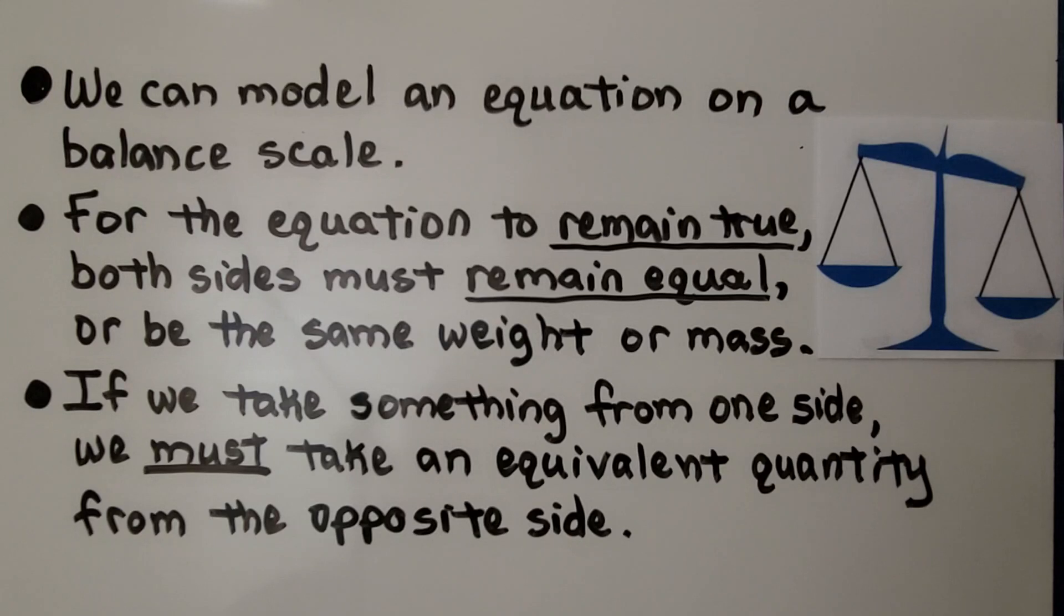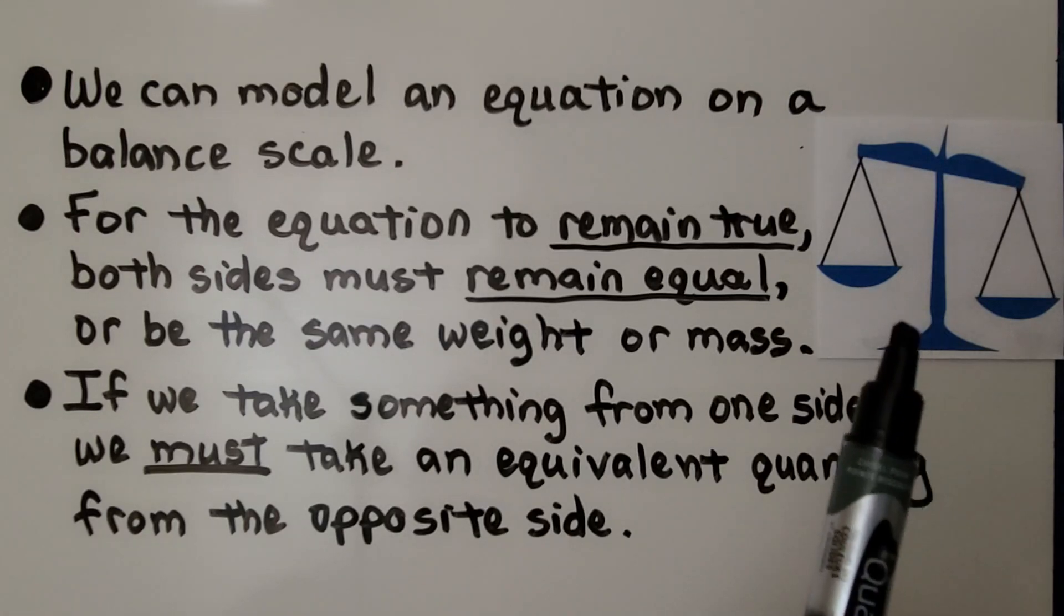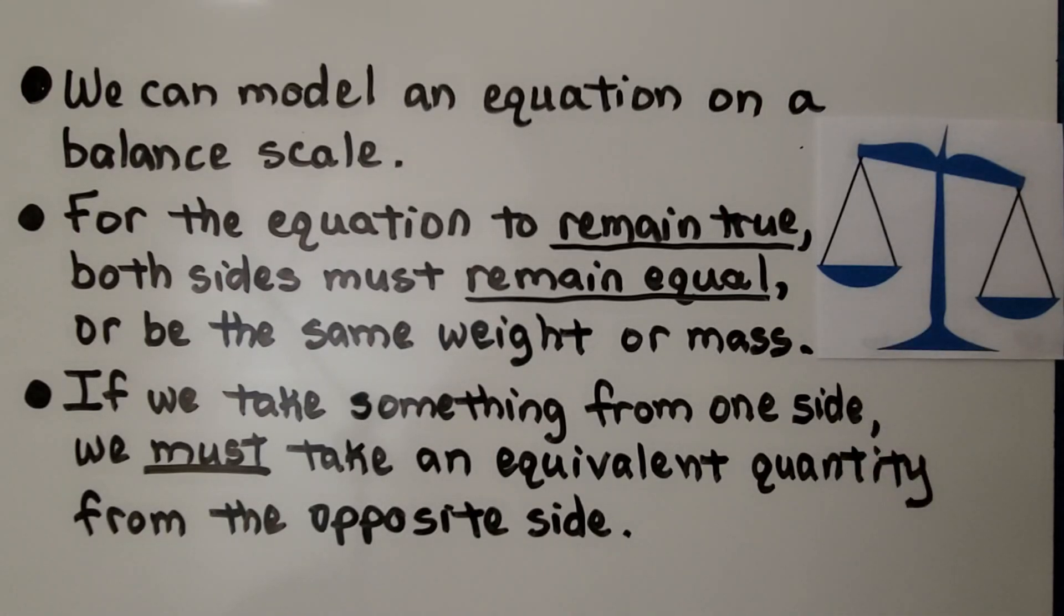We can model an equation on a balanced scale. This is a balanced scale. For the equation to remain true, both sides must remain equal, or be the same weight or mass. If we take something from one side, we must take an equivalent quantity from the opposite side.